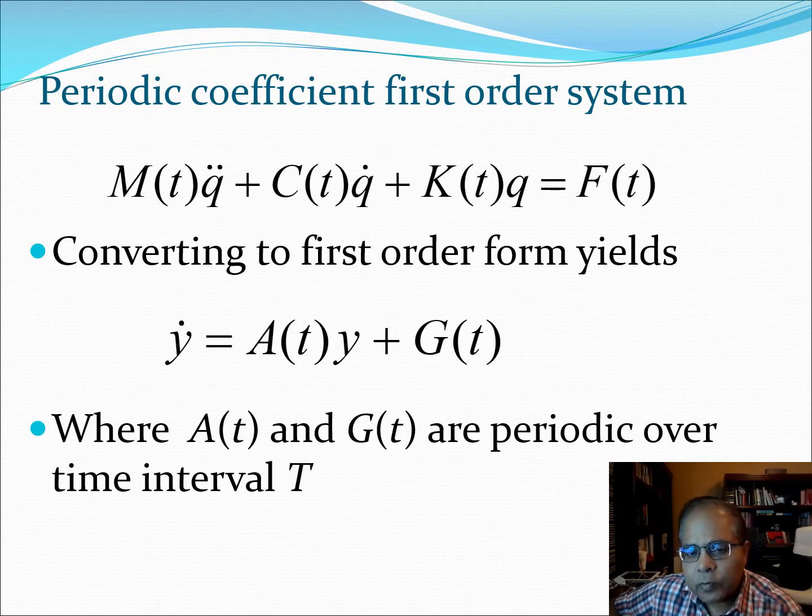So the first thing we do before we try to use Floquet theory is that we convert this M, C, K system into a system of first order differential equations. This system has the form Y dot is A(t) Y plus G(t). Essentially now the information about the system matrices M, C and K is contained in A and the information about the force vector F is contained in this vector G. And now A(t) and G(t) are periodic and the time period is T.